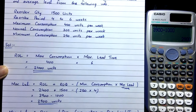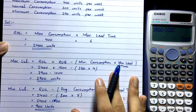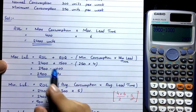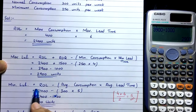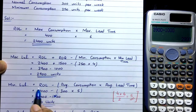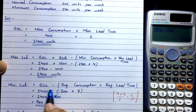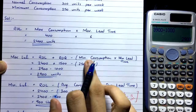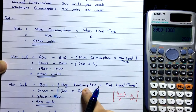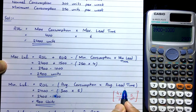Now we calculate the minimum level. Its formula is a shorter version of the maximum level formula: Minimum Level = Reorder Level − (Average Consumption × Average Lead Time). Notice we do not include the ROQ, and we use average consumption and average lead time rather than minimum values.